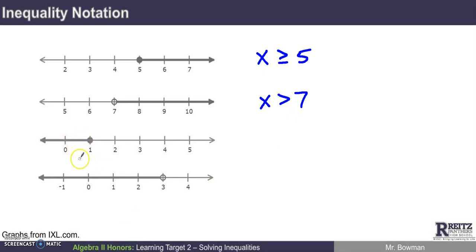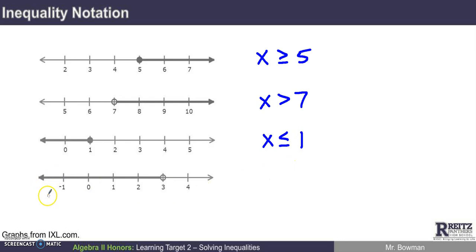These next two inequalities both involve being less than some number. The first includes 1, so we write x is less than or equal to 1. The second shows all numbers less than 3 but not equal to 3, so we write x is less than 3. These are the ways to write these types of inequalities in inequality notation.